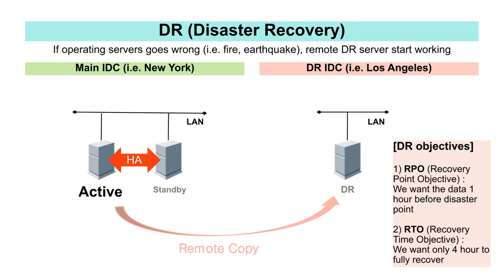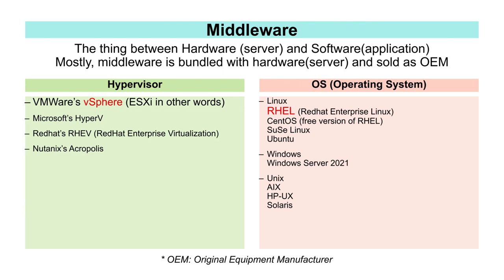This is because when a disaster occurs and the servers of the main IDC are damaged, it is quite difficult for the DR server to immediately take over that role. Next is middleware. Middleware is a component that lies between hardware and software. Hardware is the server and software is the application. What lies in between is a hypervisor and an operating system, or OS, for virtualization. This middleware must run on the server and the server cannot operate without it, so the server and middleware essentially move as one body. For this reason, middleware is often bundled with servers in an OEM manner.